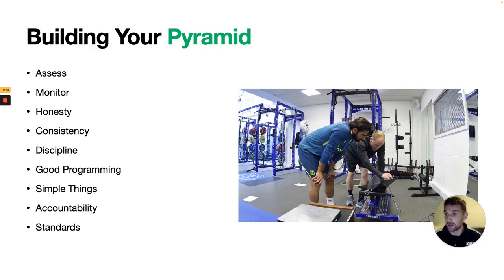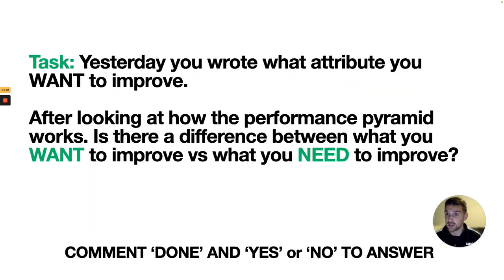Building a pyramid: keep it simple — assess, monitor, stay honest about what you need to improve, stay consistent, get good programming, do the simple things well, get someone to keep you accountable, and have high standards. Today's task is to write down what you need to improve versus what you want to improve. It might be the same as yesterday, but if not, I'd love to hear what the difference is.